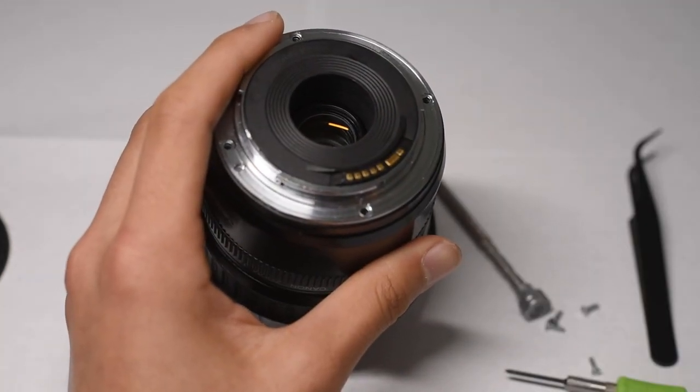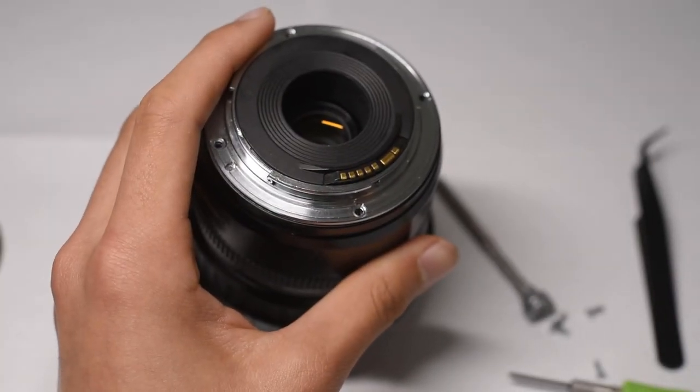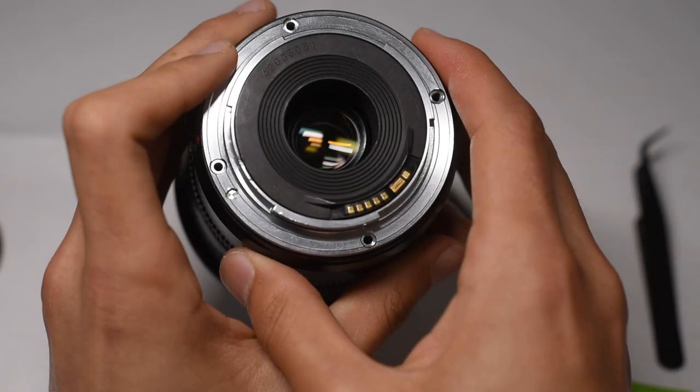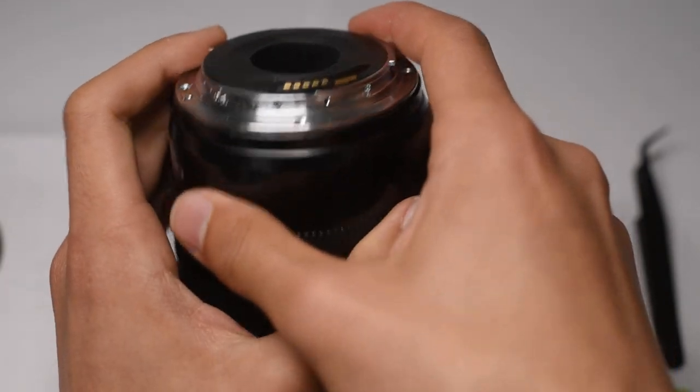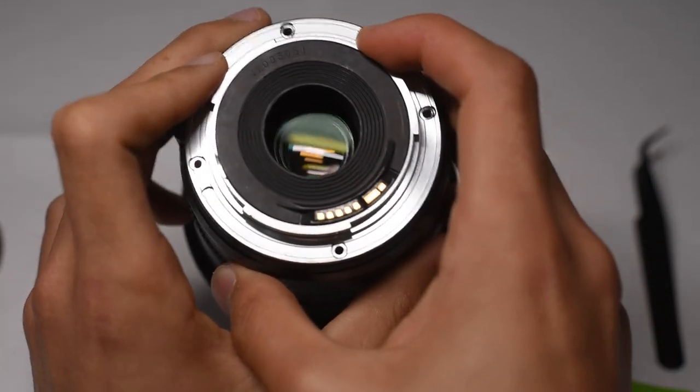When you get to this part where you've disassembled, you've taken out the four main screws holding the mounting plate to the rest of the lens.